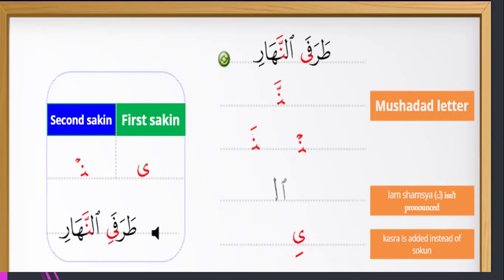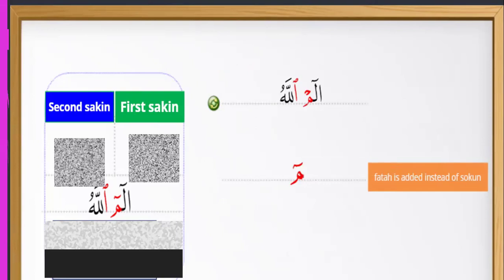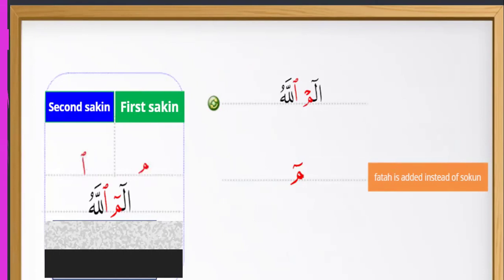Alif lam mima Allah — yes, fatha is added instead of sukun. Alif lam mima Allah — first sukun is meem, second sukun is meem. Not 'alif lam mima,' yes — correct.